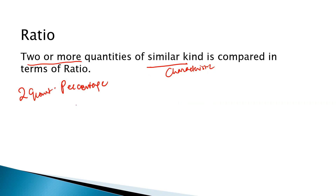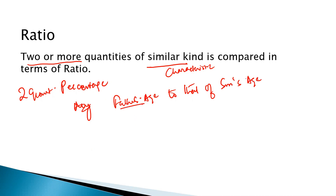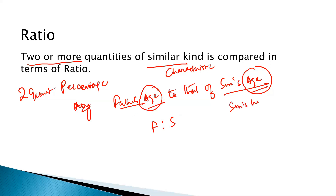For example, if I ask you to compare father's age to that of son's age, this is absolutely admissible because the quantities we are trying to compare both have the characteristic of age — similar kind. So it's permissible to compare. But I cannot say that father's age to that of son's height. This is not acceptable because the quantities we are trying to compare do not have similar characteristics. We need to be focused on this: do they possess similar characteristics or not? If they do not, we cannot compare them.